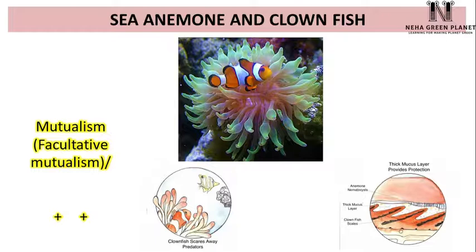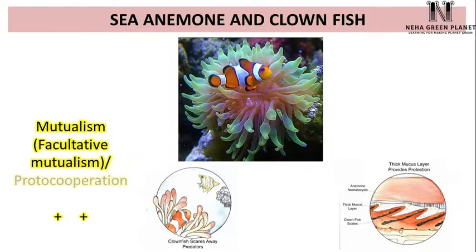Facultative means that the species can even survive when this association does not exist — it is not obligatory for clownfish and sea anemone to stay together for survival, but if they are together they benefit in a much better way. This relationship is also known as proto-cooperation.